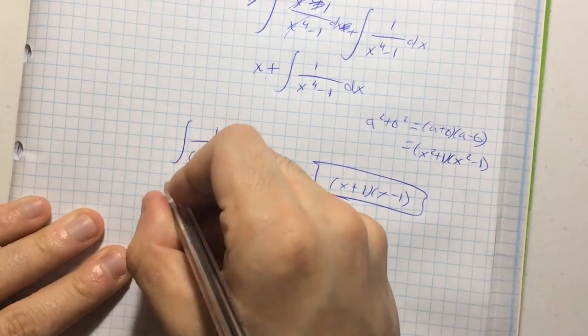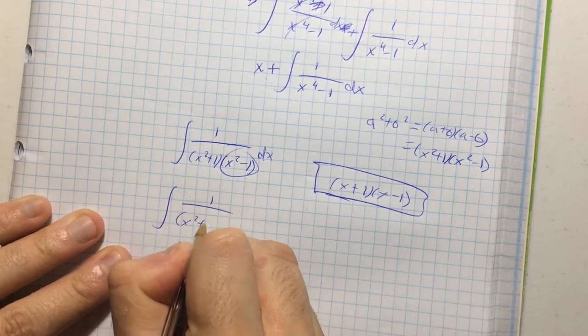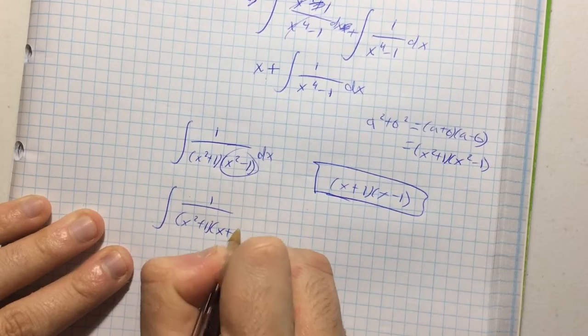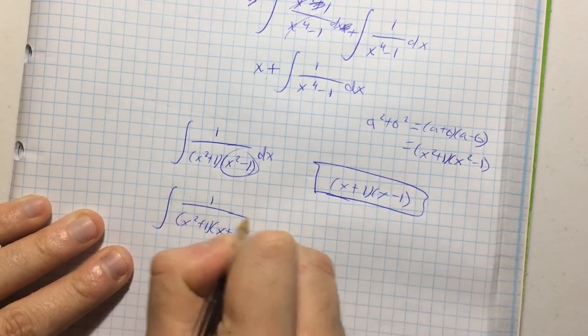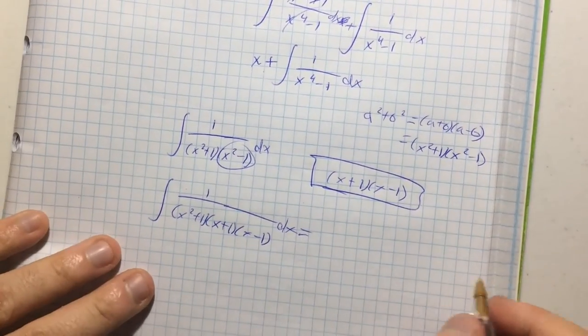So, let's do that. So, let's apply that. So, the integral is now the integral of one over x squared plus one, x plus one, x minus one, dx. And now, let's split it into a series of partial fractions.